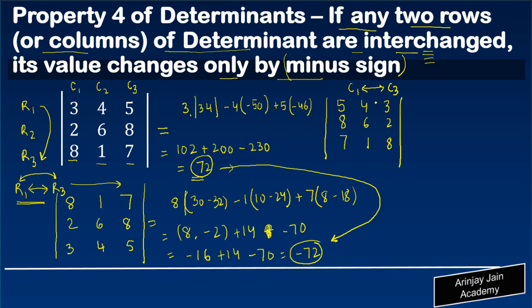Now this same property should hold for the column as well. Shall we do that? We will expand again with row 1: 5 times (6, 8s are 48 minus 2 gives you 46), minus 4 (8, 8s are 64 minus 14 gives you 50), plus 3 (8 times 1 gives you 8 minus 42 gives you minus 34).